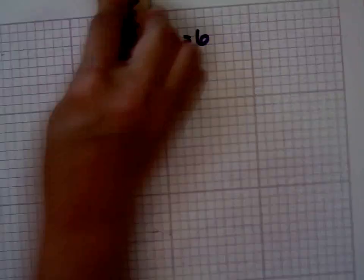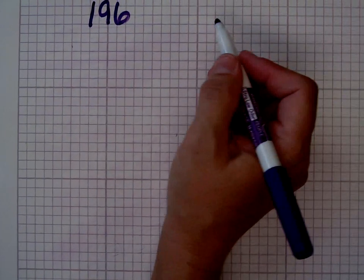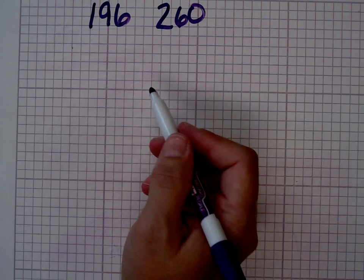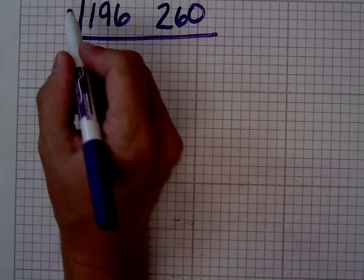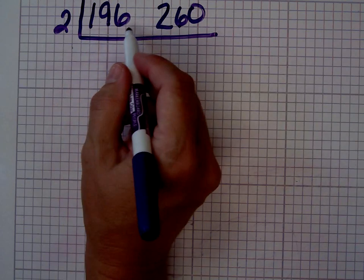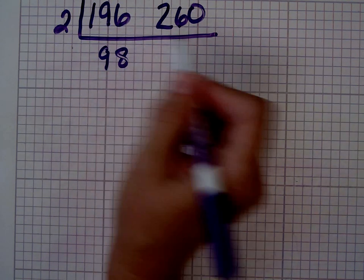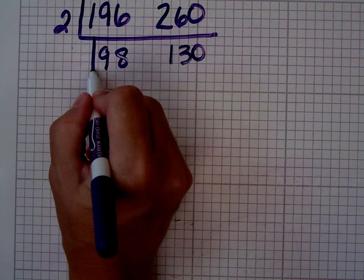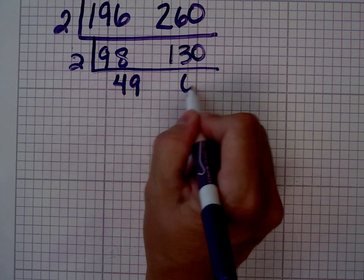Let's do one more problem. One hundred and ninety-six and two hundred and sixty — big numbers. Am I going to have a big birthday cake? We'll find out, but I know they're both even. Two goes into one hundred and ninety-six ninety-eight times, and into two hundred and sixty one hundred and thirty times. I'm still looking at two even numbers: ninety-eight divided by two is forty-nine, and one hundred and thirty divided by two is sixty-five.